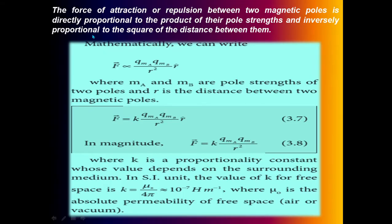The force of attraction or repulsion between two magnetic poles is directly proportional to the product of their pole strengths and inversely proportional to the square of the distance between them. Mathematically, we can write: Force F(r) is directly proportional to the product of the pole strengths, that is q_mA into q_mB, divided by r squared, into r-hat.